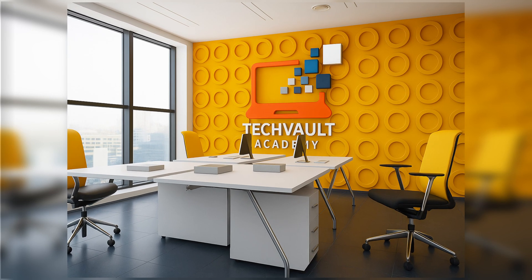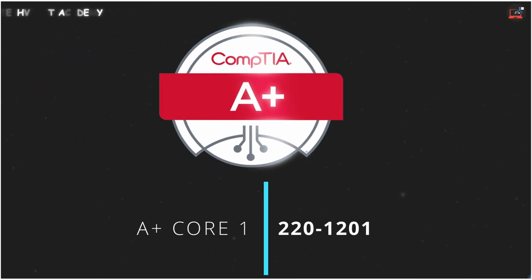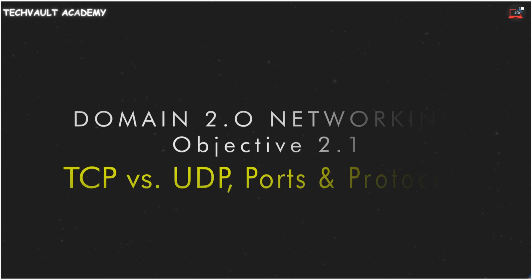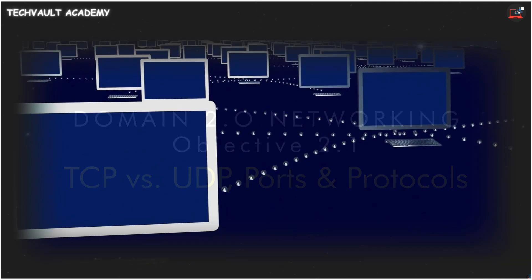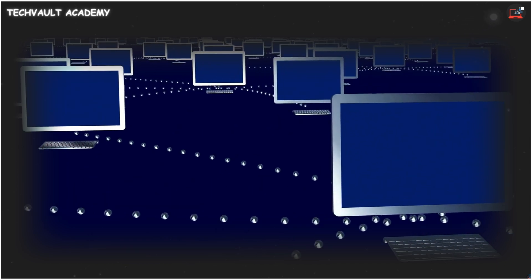Welcome to TechVault Academy's A+ Core 1 220-1201 last-minute review. We're now diving into Domain 2, networking, starting with Objective 2.1: comparing and contrasting TCP and UDP ports, protocols, and their purposes. This is fundamental to understanding how devices talk on a network.